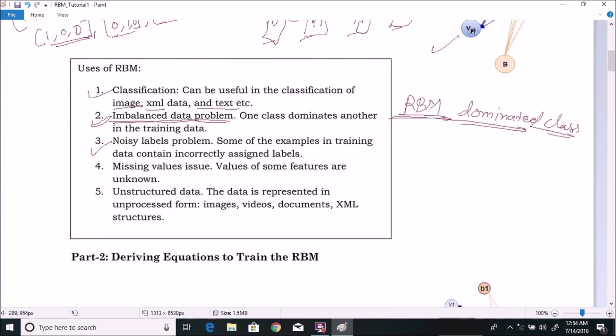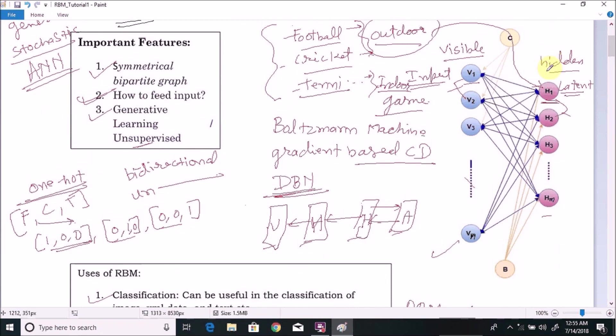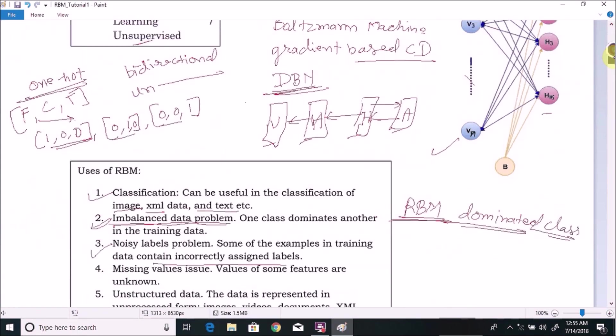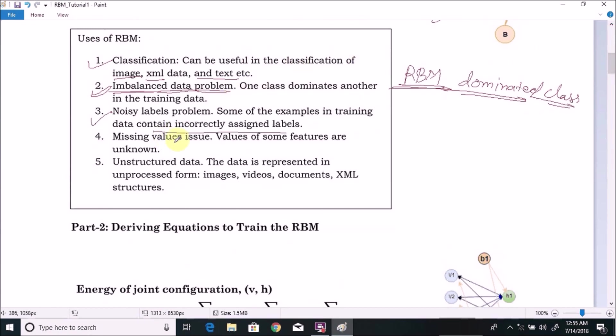Next is noisy label problem. Several times we get the issue related to noisy labels. This means data contains incorrectly assigned labels. As you can see here in this example, the hidden layer nodes contain the latent information that in turn represents the labels also. But you may use this hidden layer for another latent information also. This is not just a final case. So if the hidden layer nodes represent those labels, then after training the Restricted Boltzmann Machine, we can identify the noisy labels for the data.